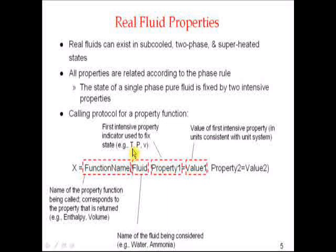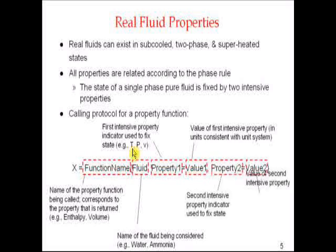The property indicator tells EES what property is being used to fix the state — it could be T for temperature, P for pressure, V for volume, and so on — followed by 'equals' and then the value. So if I type T=100, I'm saying to EES the temperature equals 100. That value must be consistent with the unit system set, so if I used the $UnitSystem directive and set Kelvin, EES will expect T=100 to mean 100 Kelvin. Then the same applies for the second property, such as P=100000 Pascals.